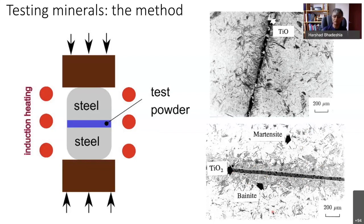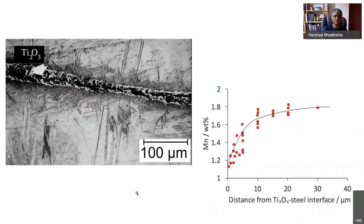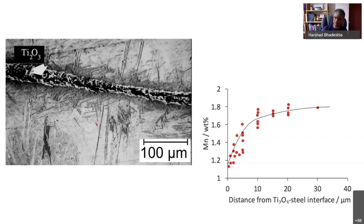It doesn't tell you about the mechanism by which these inclusions are working, and the mechanisms can actually be manifold. For example, this is Di2O3. The way that Di2O3 works is that it has an affinity for manganese. So if your steel contains manganese, it actually absorbs that manganese at the junction. This microanalysis plot shows that near the inclusion-steel interface you have a depletion of manganese, because it has entered into the titanium oxide. So this particular inclusion works by absorbing an austenite-stabilizing element from its surroundings, and therefore it stimulates nucleation.